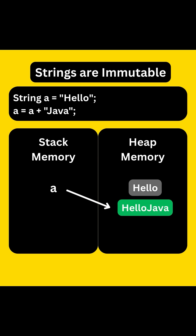Instead, a new string 'hello Java' is created in memory and A now points to that. That's because strings are immutable — once created, they cannot be modified.